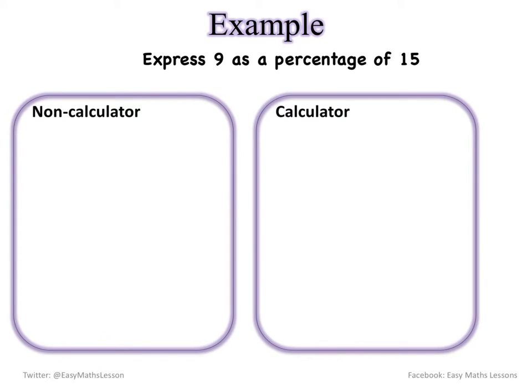Okay what if my denominator is not actually a factor of 100? What do I do? So in this case I've got 15 and I can just do a simple division sum. So 15 goes into 9.